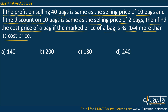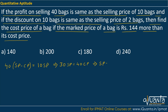Profit on selling 40 bags — profit is selling price minus cost price. Profit of 40 bags, we multiply by 40, and this is equal to the selling price of 10 bags, so 10 SP. Solving this further, we get 30 SP equal to 40 CP, or SP equal to 4 CP by 3. This is the equation that we get.